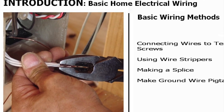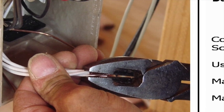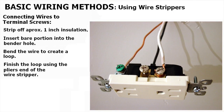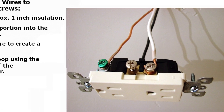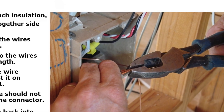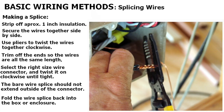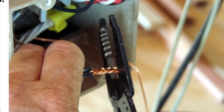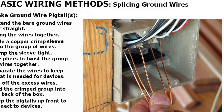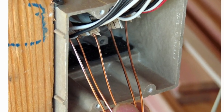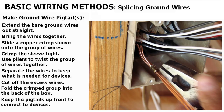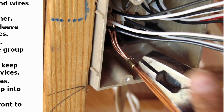Then we look at basic wiring methods: connecting wires to terminal screws, how to use a wire stripper, making a wire splice, a pigtail, and a pigtail ground. Pigtails are used for splicing wires and making connections to switches, outlets, and receptacles. We show you the whole process using the tools and methods, including how to make a splice for a pigtail or for splicing wires through in a junction box.